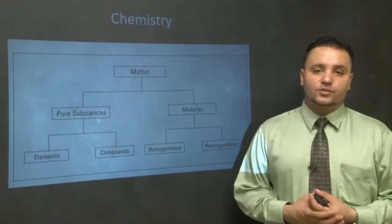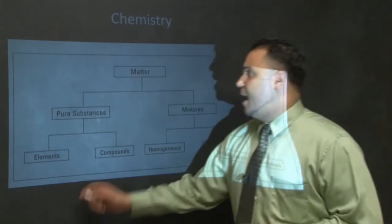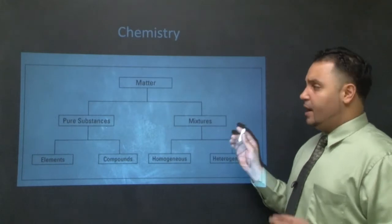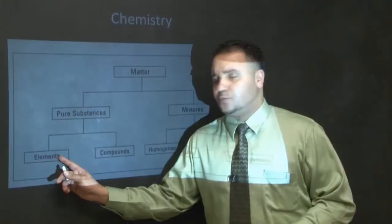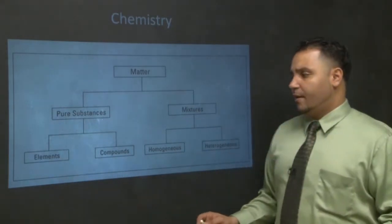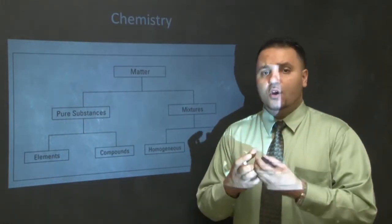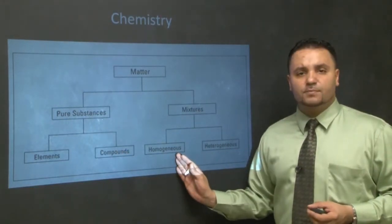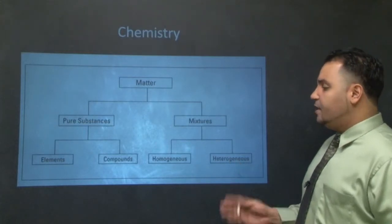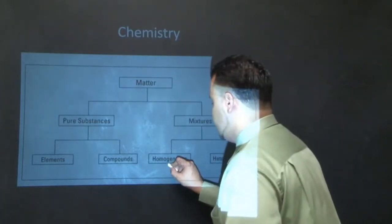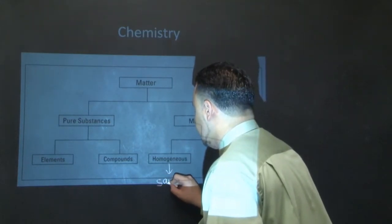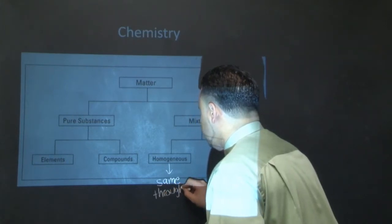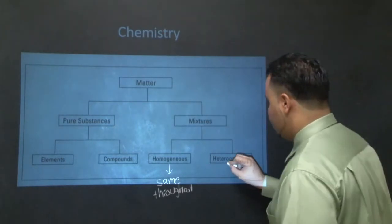Let's take a look at how substances are broken down. Very nicely put here, we have matter, and matter could either be a pure substance or it could be a mixture. Breaking them down even further, the pure substance includes the periodic table of elements, and then sometimes those elements form compounds or molecules together. Then we have two types of mixtures - the homogeneous mixture and the heterogeneous mixture. The big difference between the two is that the homogeneous mixture is the same throughout, while the heterogeneous mixture is different throughout.